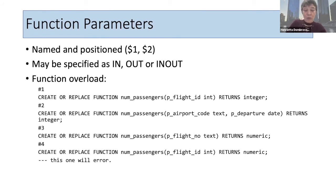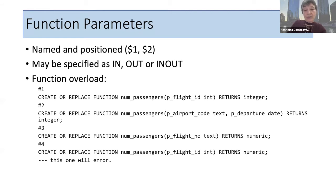Everything with overloaded functions is fine except you cannot change the return type. If all three overloaded versions return integer and you try to return numeric, it will error — all functions with the same name must return the same type. Another important feature is nested dollar quoting. Quite often you need strings within strings — for example, passing an error message containing quotes. Postgres allows nested dollar quoting: double dollar signs mark the beginning and end of a string, and you can put any identifier between them, allowing strings nested within strings within strings.